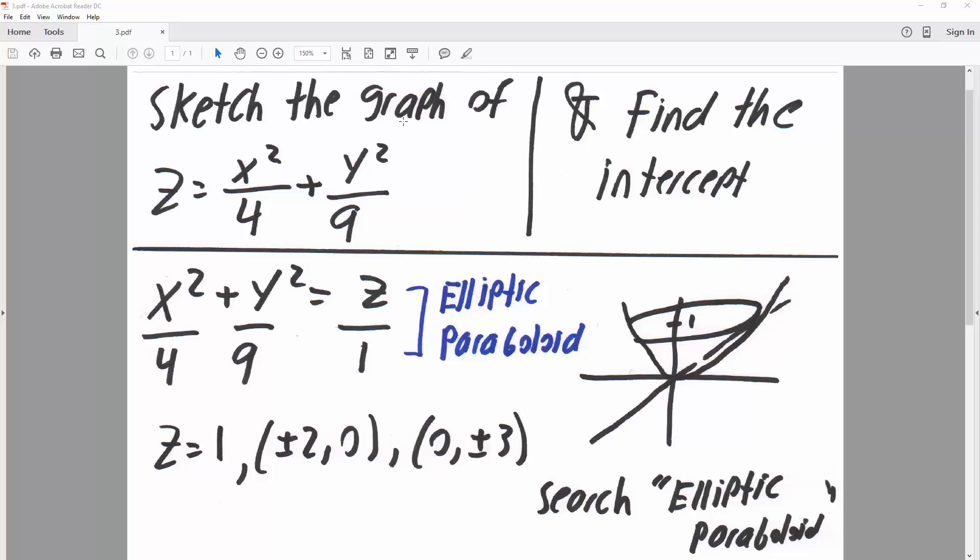Okay, in this problem we want to sketch the graph and also find the intercept of z equals x squared divided by 4 plus y squared divided by 9.